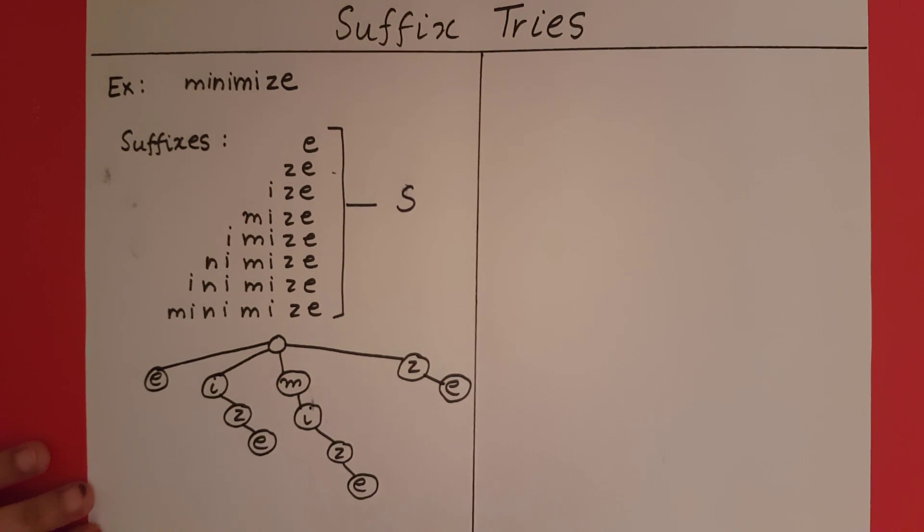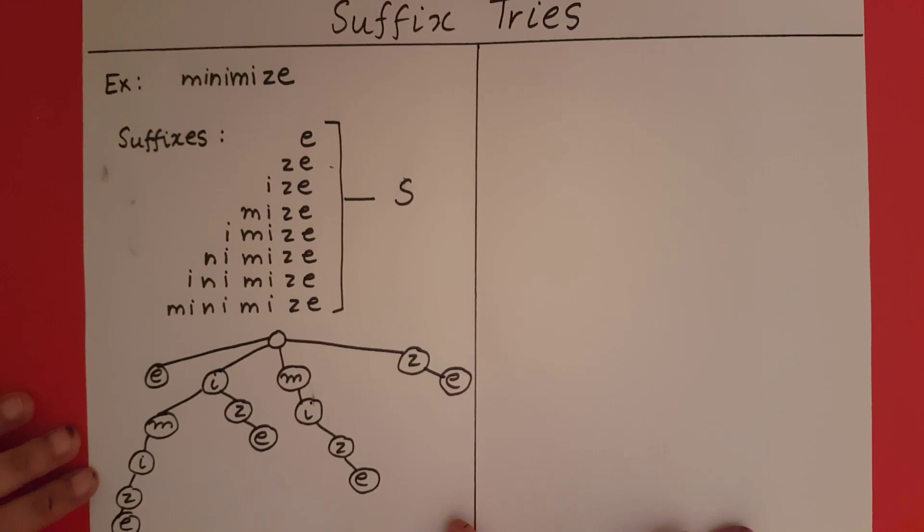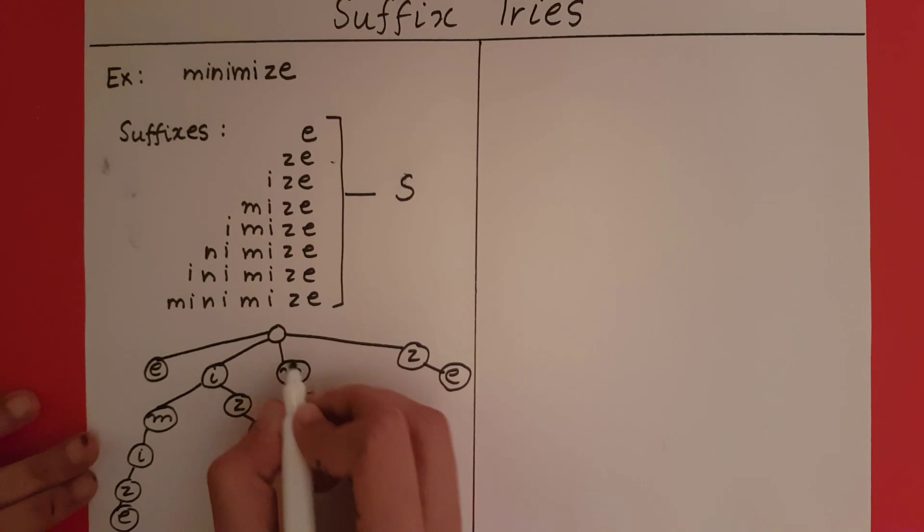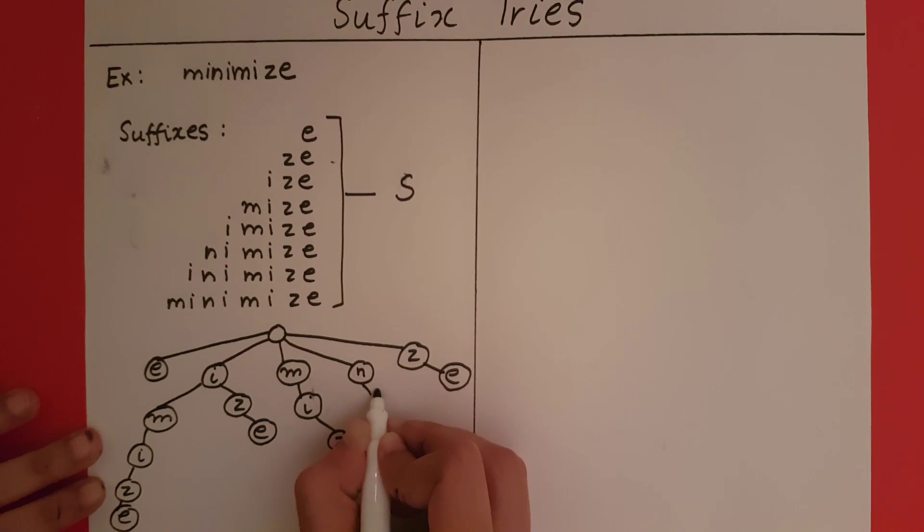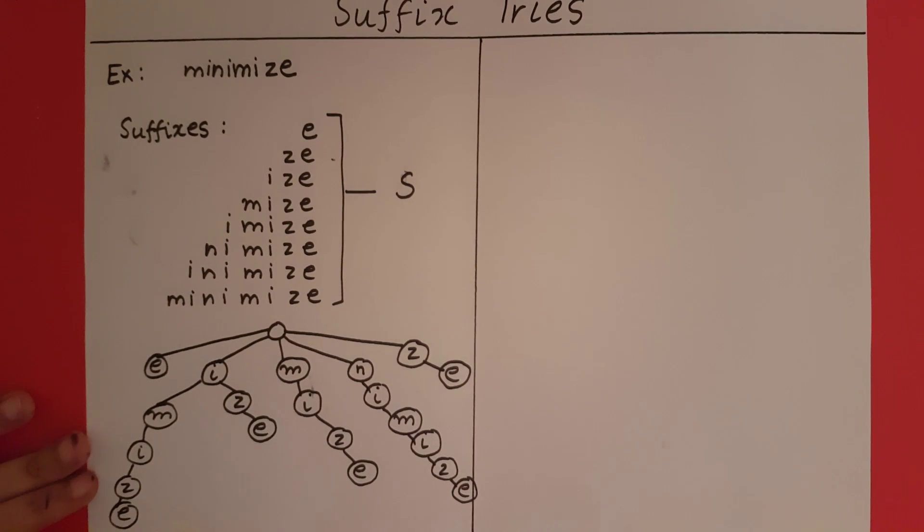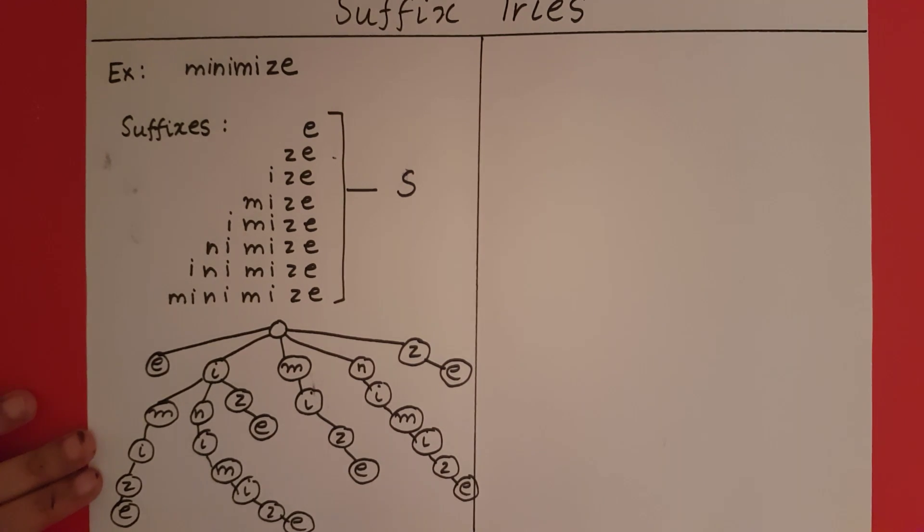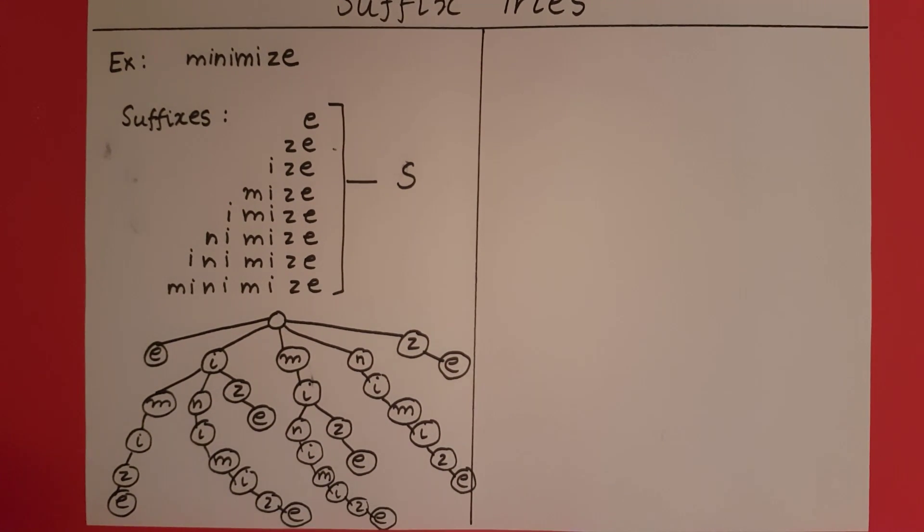Then we have imize, so I already have an i here. Then I have nimize, then I have minimize. So this is going to be our standard trie.